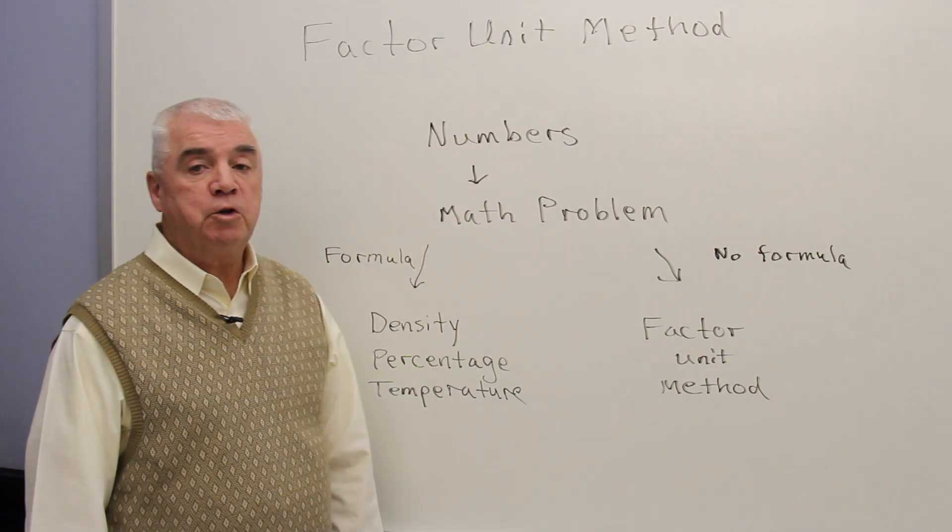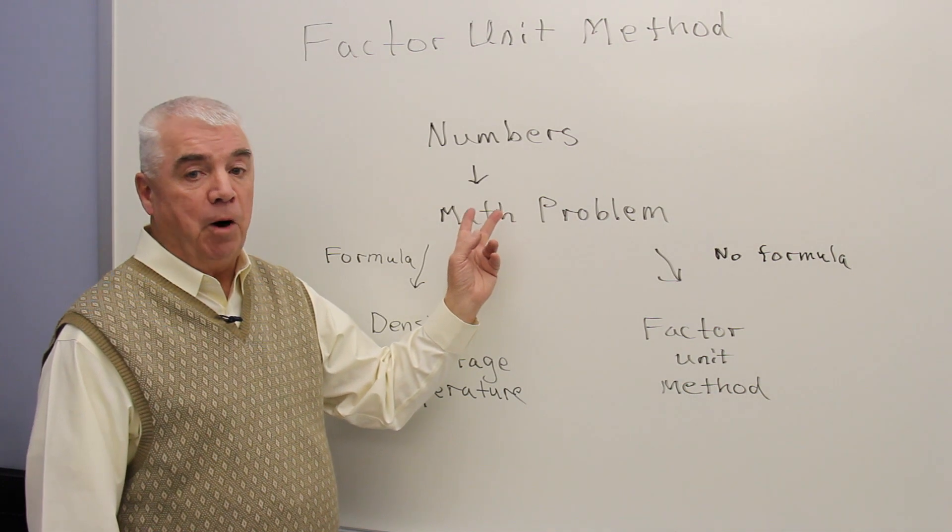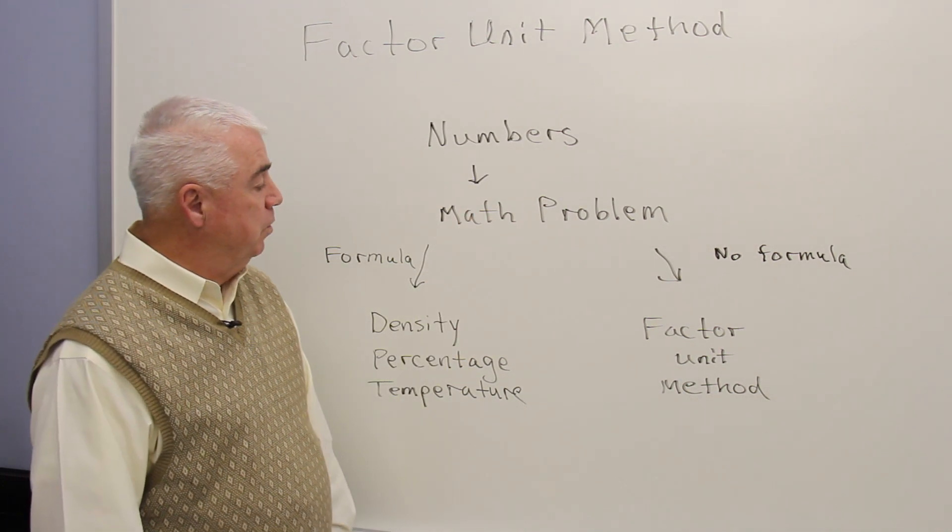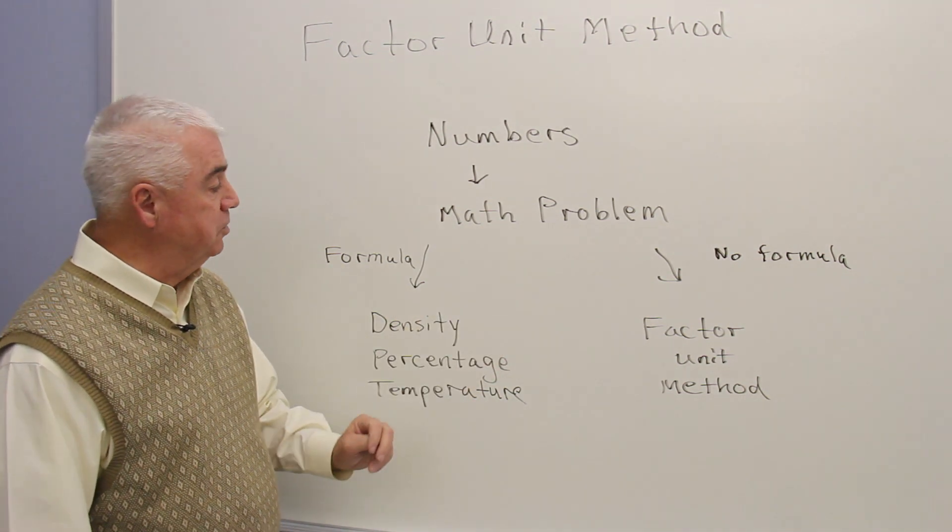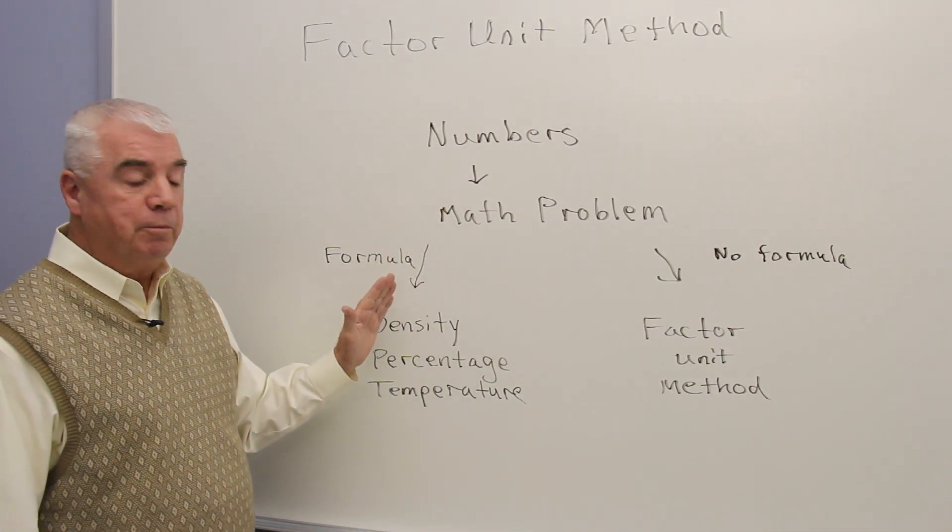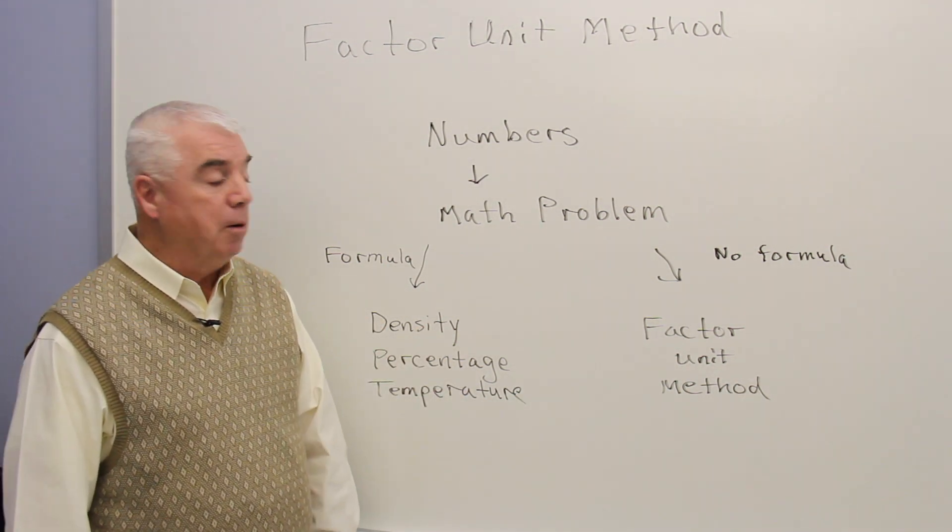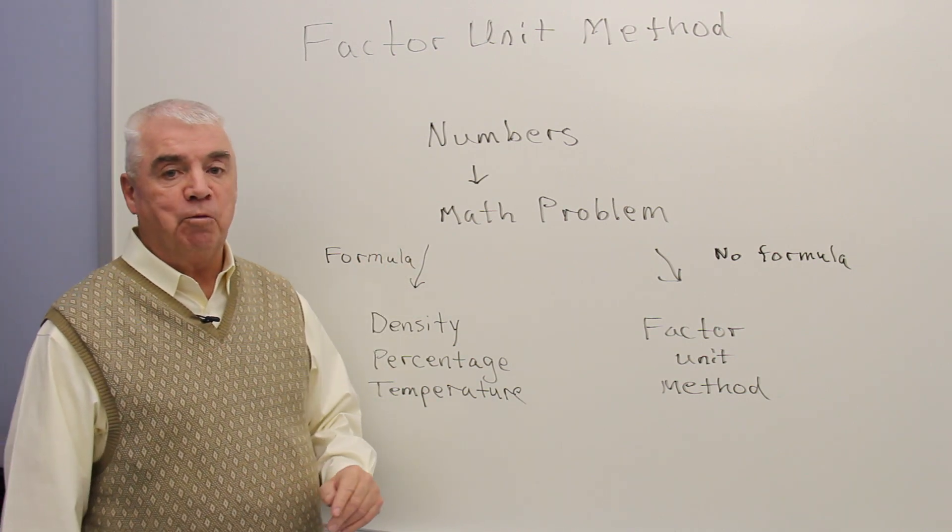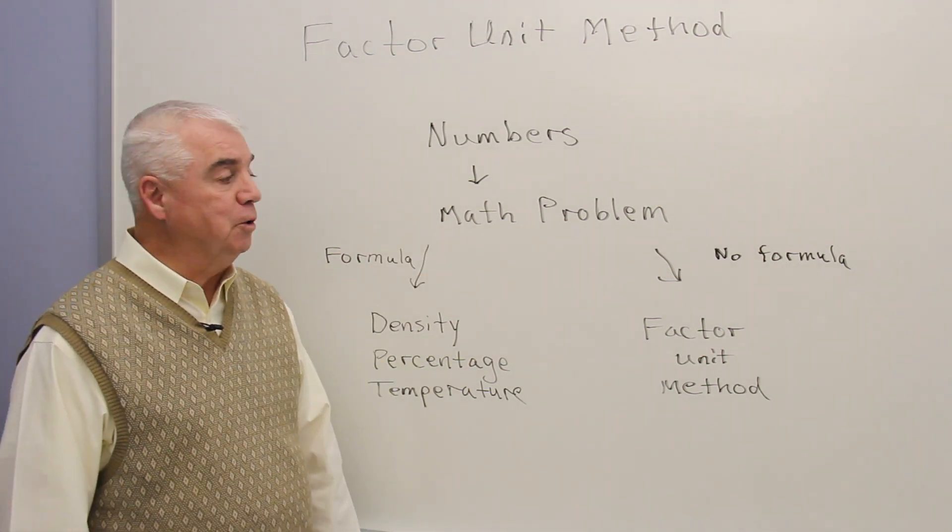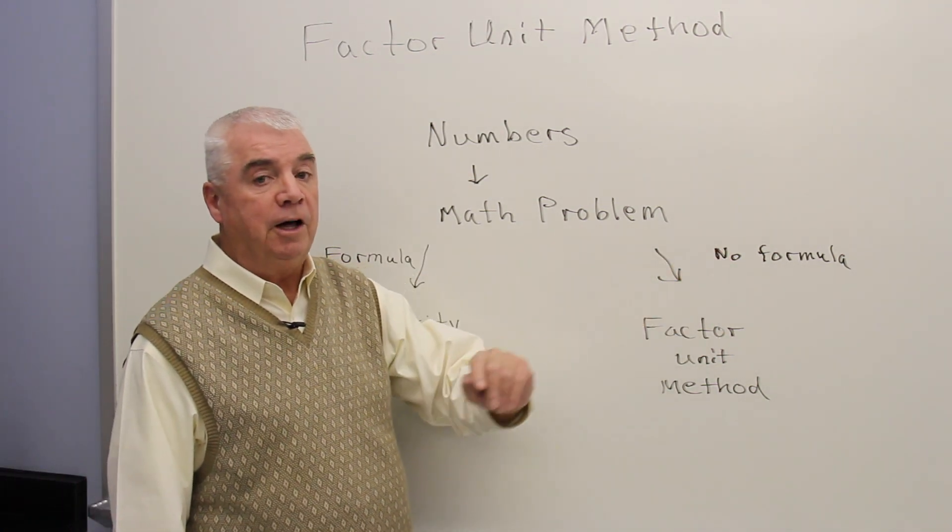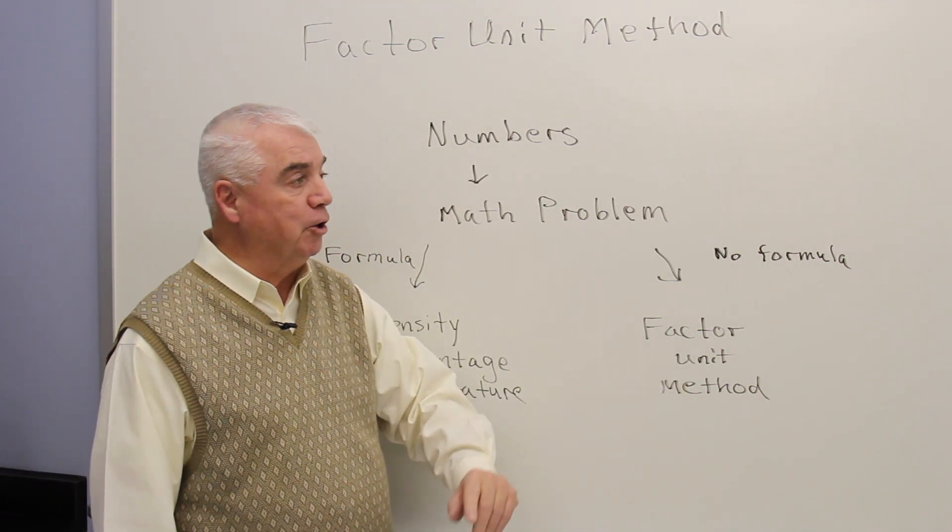Whenever I see numbers in a quiz question or an exam question, I say to myself, it's probably a math problem. And all math problems, in our text at least, can be worked in one of two ways. There's some that we have a formula for, for example, density or percentage or temperature problems. And when you have a formula, that's like a roadmap. It tells you how to set up the problem and where to substitute the numbers. If you don't have a formula, then virtually all of the other problems can be worked by the factor unit method.